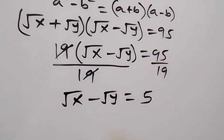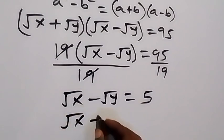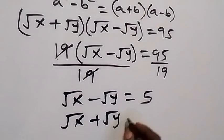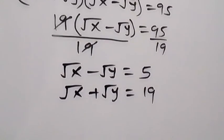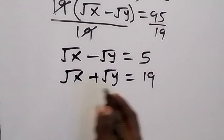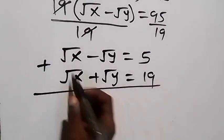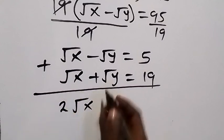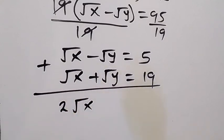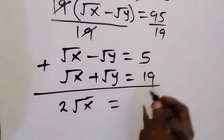We pair this equation with equation two: root x plus root y equals 19. Solving simultaneously by adding the two equations, root x plus root x gives 2 root x, and minus root y plus root y becomes 0, giving 2 root x equals 5 plus 19, which is 24.